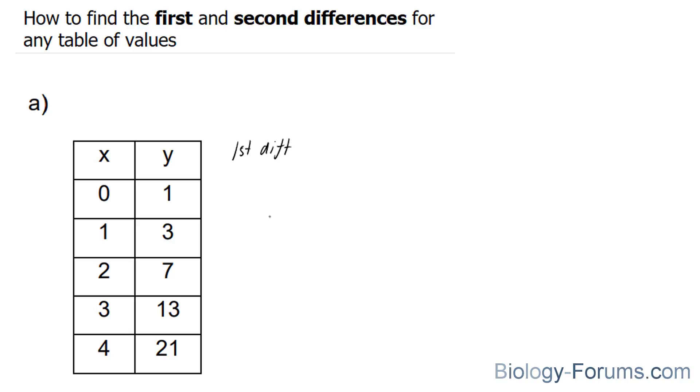And what you have to do is subtract every preceding y with the previous y. So in our case, we have 3 minus 1, 7 minus 3, 13 minus 7, and 21 minus 13.